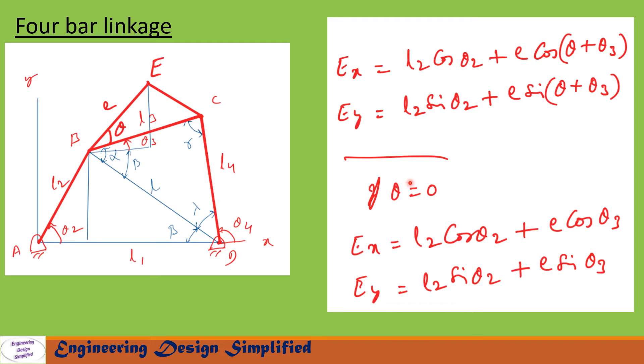If theta equals 0, that means this point falls on link BC itself. In that condition, EX = L2 cos(theta2) + E cos(theta3), and EY = L2 sin(theta2) + E sin(theta3).